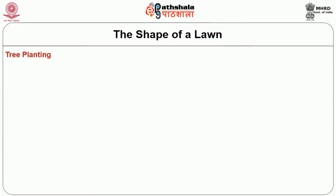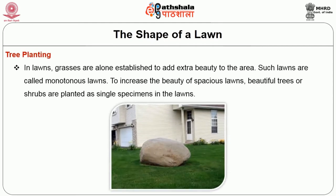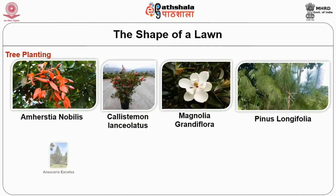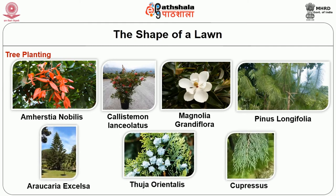Then we will see tree planting. In lawns, grasses are alone established to add extra beauty to the area. Such lawns are called monotonous lawns. To increase the beauty of spacious lawns, beautiful trees and shrubs are planted as single specimens in the lawns. Ameridis nobilis, Callistemon lanceolatus, Magnolia grandiflora, Pinus longifolia, Araucaria excelsa, Thuja orientalis etc. are important trees grown in lawns to break monotony.